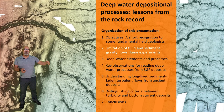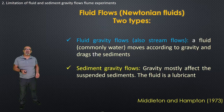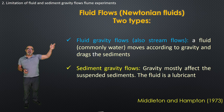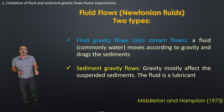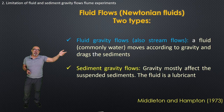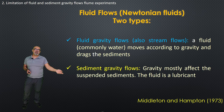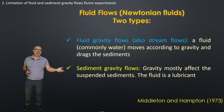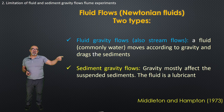I would like to discuss the limitations of flume experiments. In nature, we have two kinds of flows in Newtonian fluids: fluid gravity flows, in which a fluid — like a stream — moves by gravity and drags sediment at the bottom; and sediment gravity flows, where gravity acts on the suspended sediment and the fluid is a lubricant for the movement. Gravity operates differently in these two types of flows. Fluid gravity flows cannot happen underwater unless you have, for example, a marine bottom current in the deep water environment.